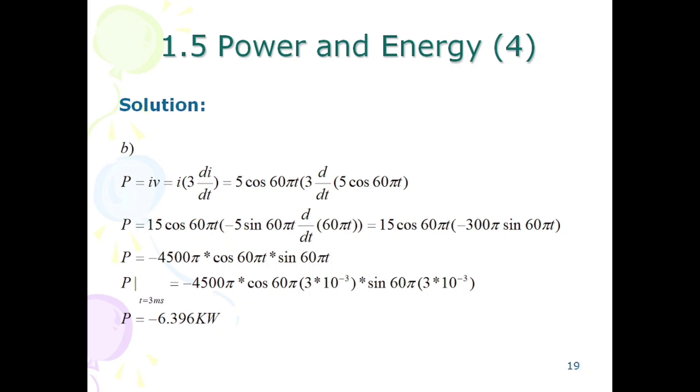Now in part B, voltage is given as 3 di over dt. We have substituted the value of voltage in formula P equals iv. We have to take the derivative of i and then product it with 3, then product it with the value of i.